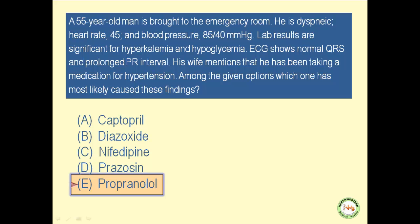The best answer is propranolol. Why does propranolol cause bradycardia? Because it has a negative chronotropic effect and inhibits beta-1 receptors on the SA node. Of course, it also slows the AV conduction, and thus also drops the heart rate. What is the term used to describe the effect of any compound that reduces AV conduction? Negative dromotropic effect.